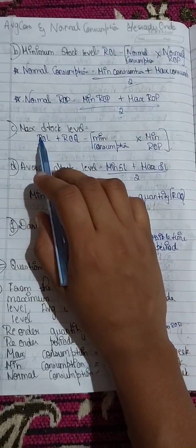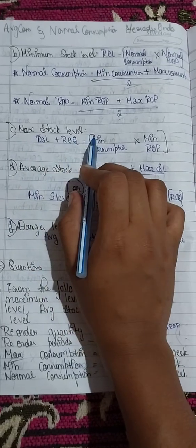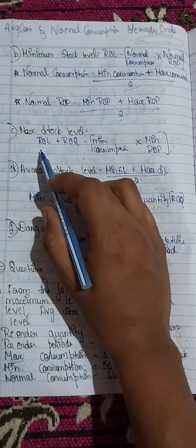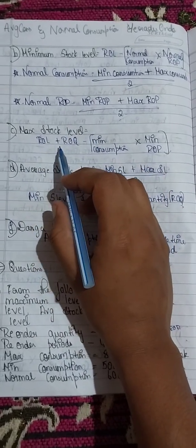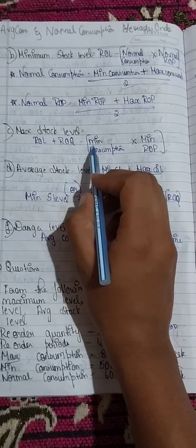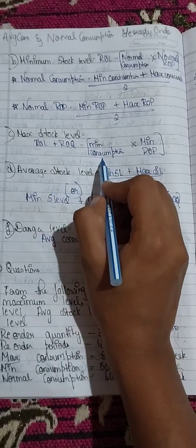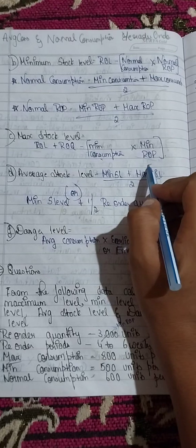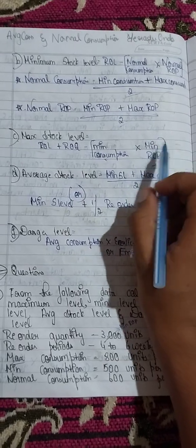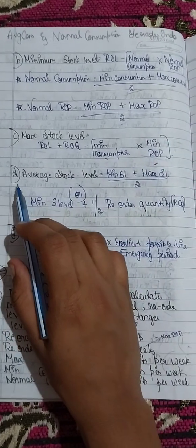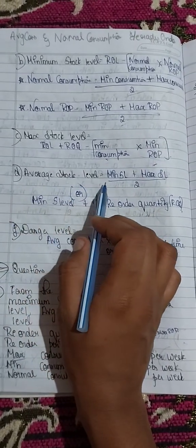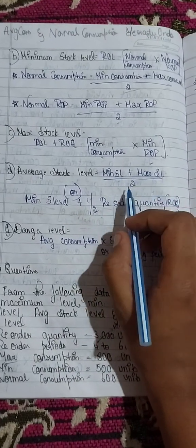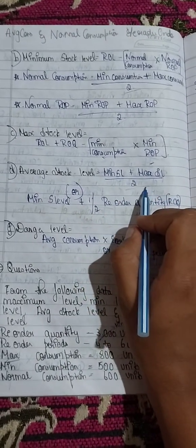The next one is maximum stock level. Maximum stock level is calculated as reorder level plus reorder quantity minus minimum consumption multiplied by minimum reorder period. Average stock level is calculated as minimum stock level plus maximum stock level divided by 2.